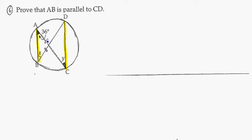And they've given us a bit of information. I see that I have an isosceles triangle here. I've got 36 degrees in that corner, and I have an X and a Y.